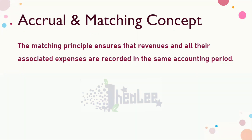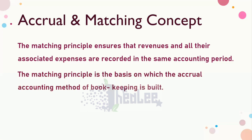On the other end are prepayments. If the bill is $20,000 but you paid $22,000, that extra $2,000 does not relate to this year, so you subtract it. Under this concept, whether or not cash is received or an amount is owing, you should record only what is related to the accounting period. The matching principle is the basis on which the accrual accounting method of bookkeeping is built.